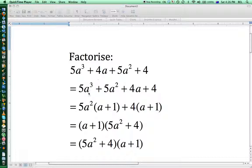I'm going to take a common factor out of these two first terms, which is 5a². 5a² taken out of here leaves an a, and 5a² taken out of here leaves 1 behind. Likewise, with these two terms, I've taken 4 out, so 4 at the front leaves an a and a 1.